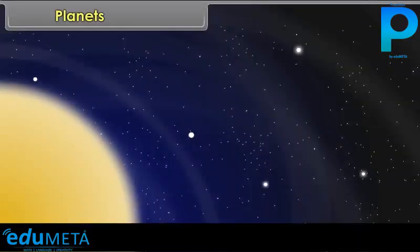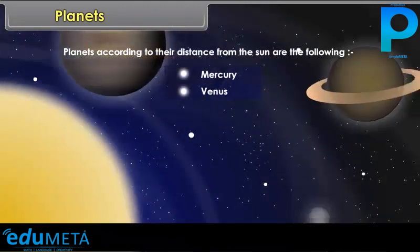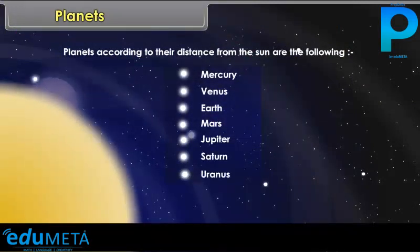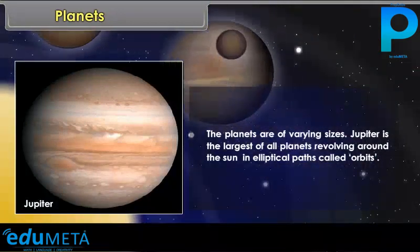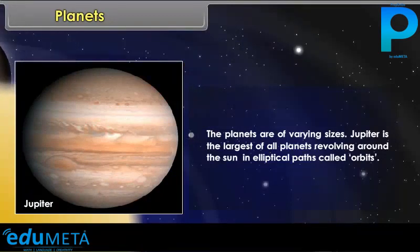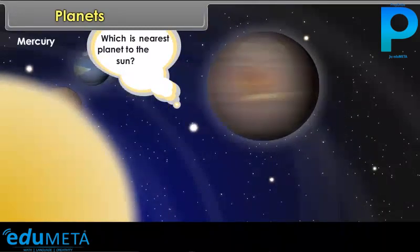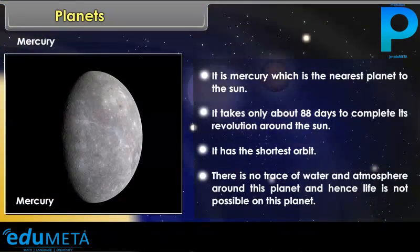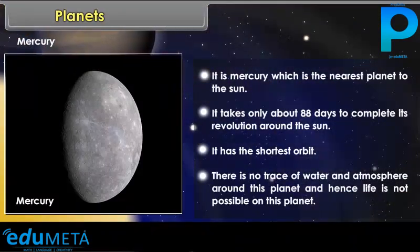Planets, according to their distance from the Sun, vary in size. Jupiter is the largest of all planets. All planets revolve around the Sun in elliptical paths called orbits. Mercury is the nearest planet to the Sun. It takes only about 88 days to complete its revolution around the Sun and has the shortest orbit. There is no trace of water and atmosphere around Mercury, and hence life is not possible on this planet.